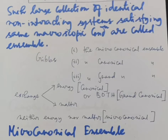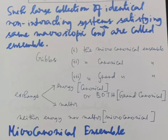Their classification depends on the manner in which their systems interact. Each of them has its own characteristic distribution. Physical systems can interact in a variety of ways - in particular they may exchange energy, or matter, or both energy and matter with each other. The ensemble in which systems exchange energy but not matter is called the canonical ensemble; that in which both energy and matter are exchanged is called the grand canonical ensemble; and that in which neither energy nor matter is exchanged is called the microcanonical ensemble.